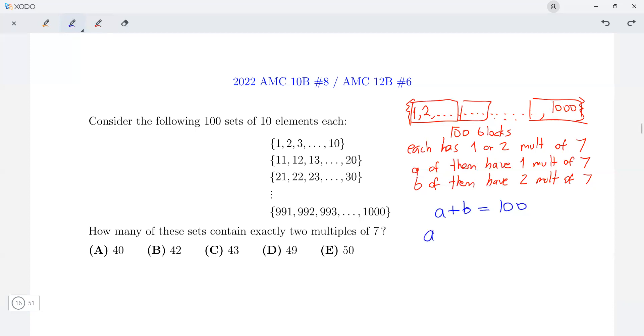Moreover, if we count the number of multiples of 7, that would be a times 1. A of the blocks have one multiple of 7, and b of the blocks have 2, so 2 times b. This is the total number of multiples of 7 up to 1000, and we can calculate that as 142.